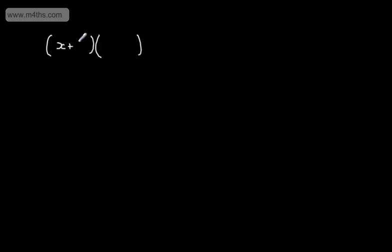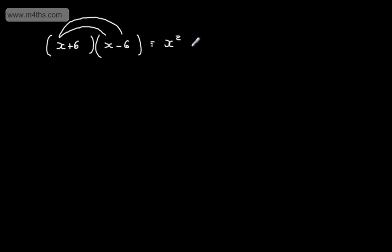If we start off with a set of double brackets, I'm going to have x plus 6 and x minus 6. If I went ahead and expanded this, I'd have x multiplied by x, which would give me x squared, then x multiplied by minus 6, which would give me minus 6x, then positive 6 multiplied by x, which is plus 6x, and finally positive 6 and minus 6, that would be minus 36.